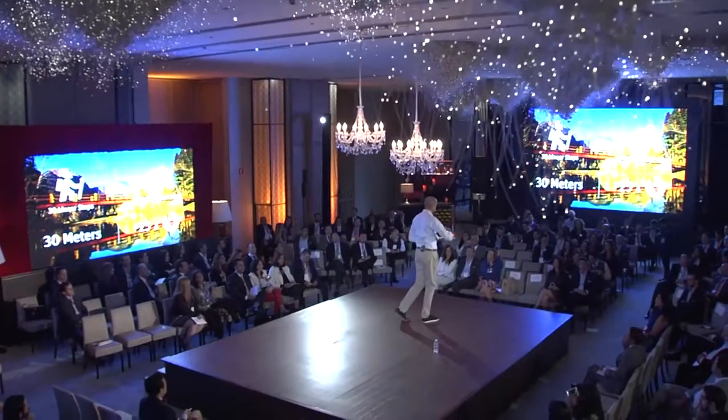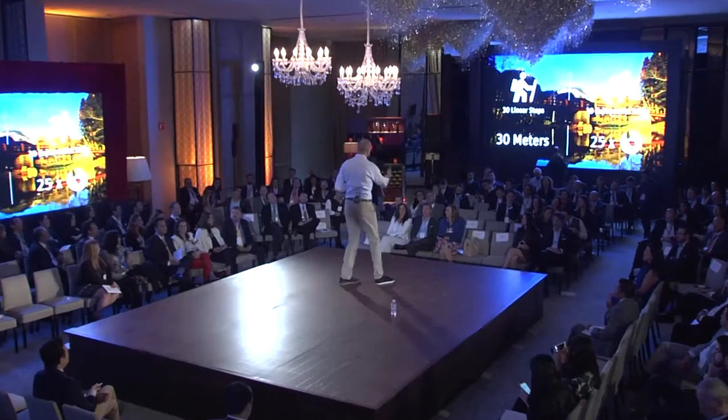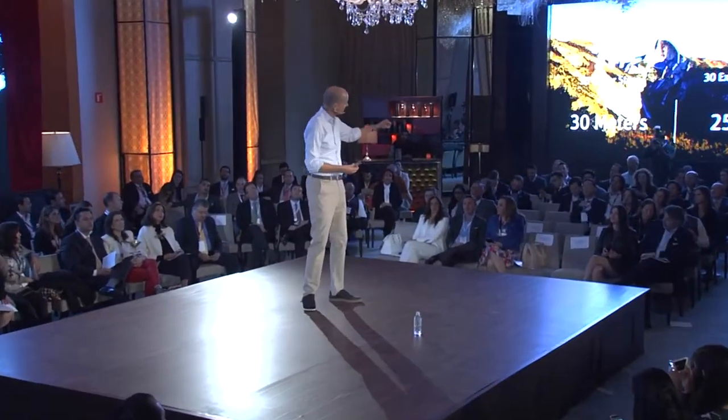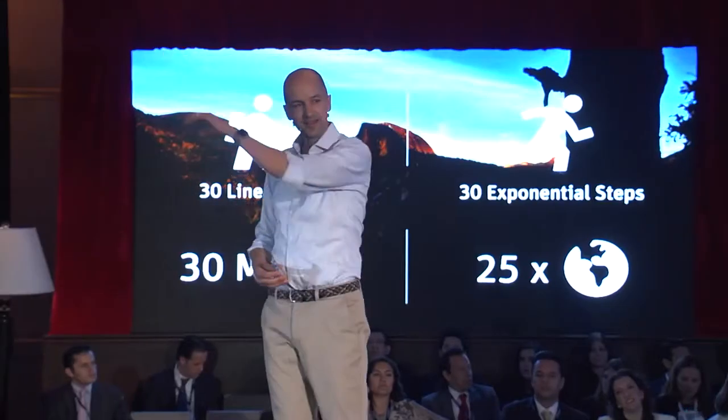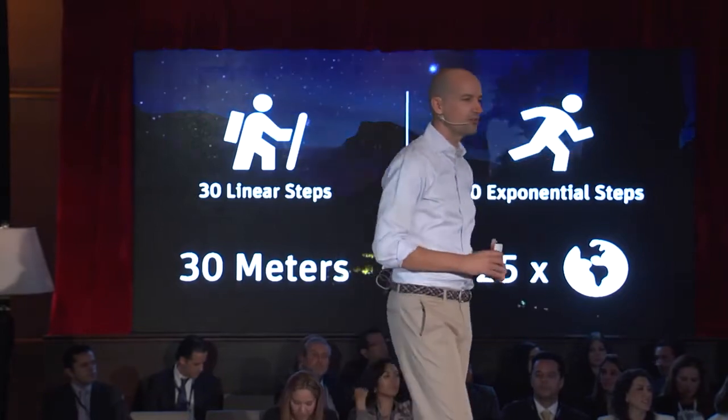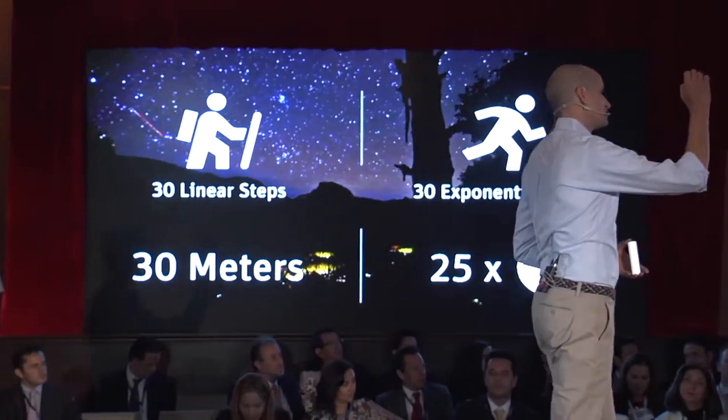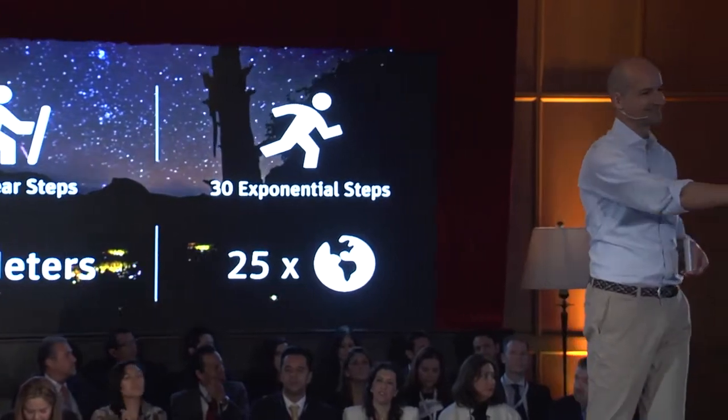Technology moves on an exponential rate, yet our thinking is linear. And just to be mean — how far do you get with 31 exponential steps? It's 50 times around planet Earth. It's a doubling again. That's the trick: technology moves on an exponential curve, and your thinking is linear.